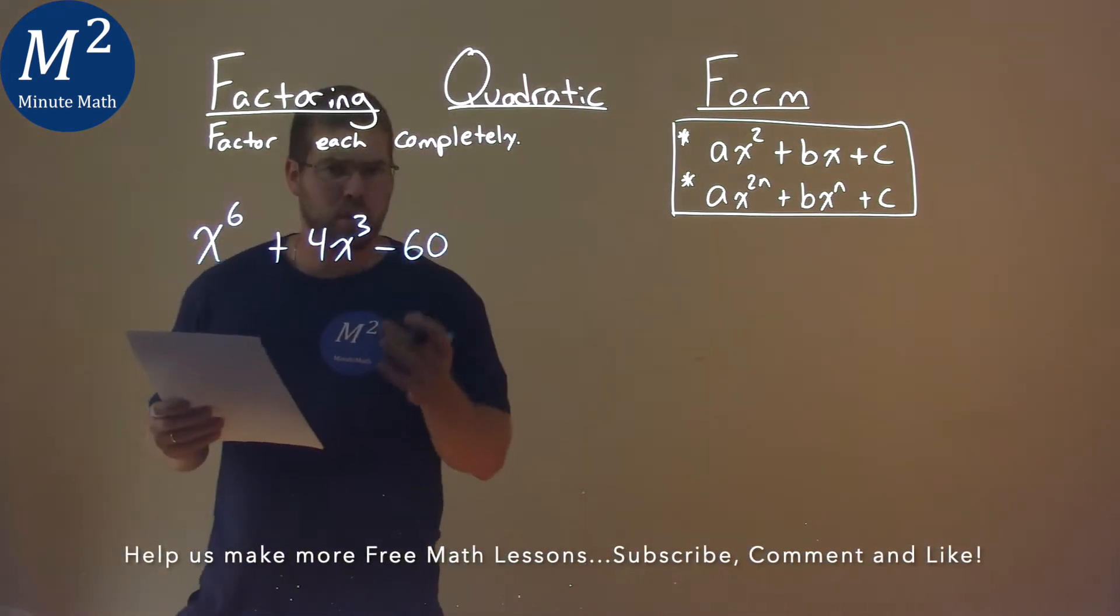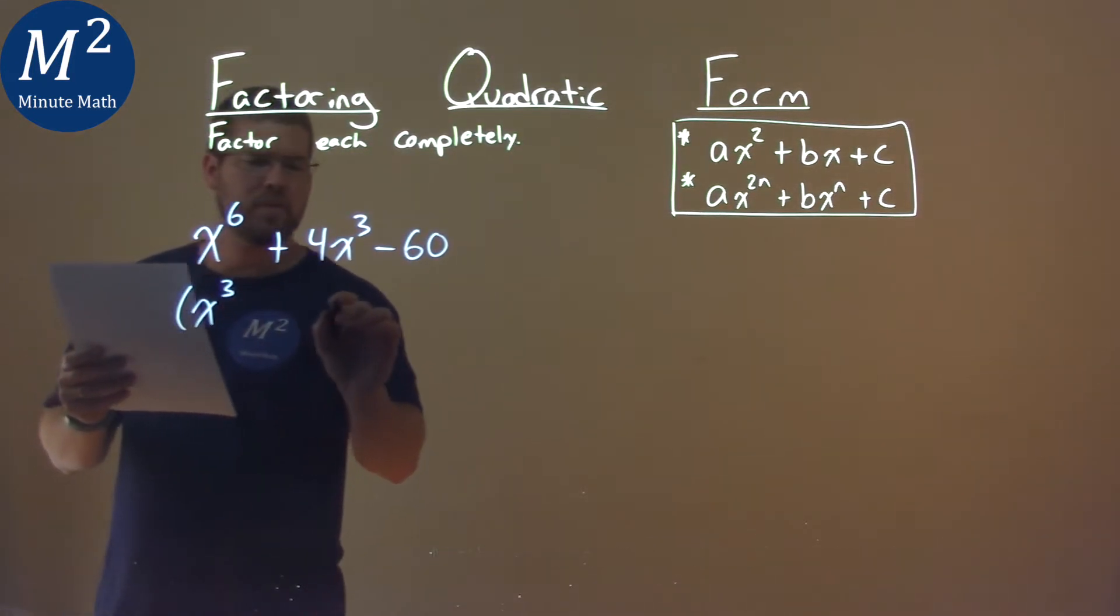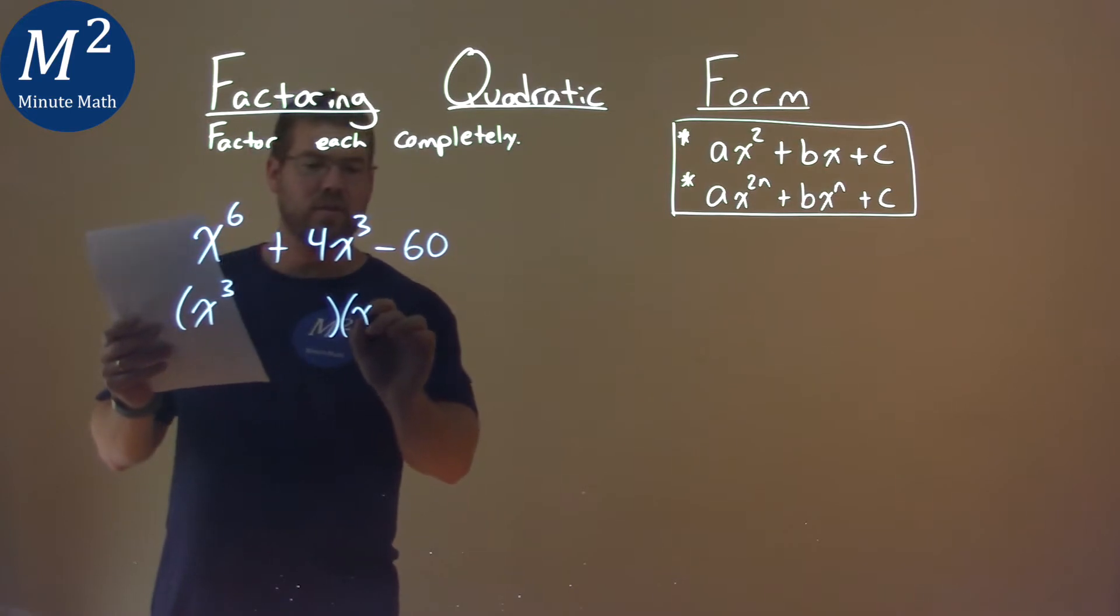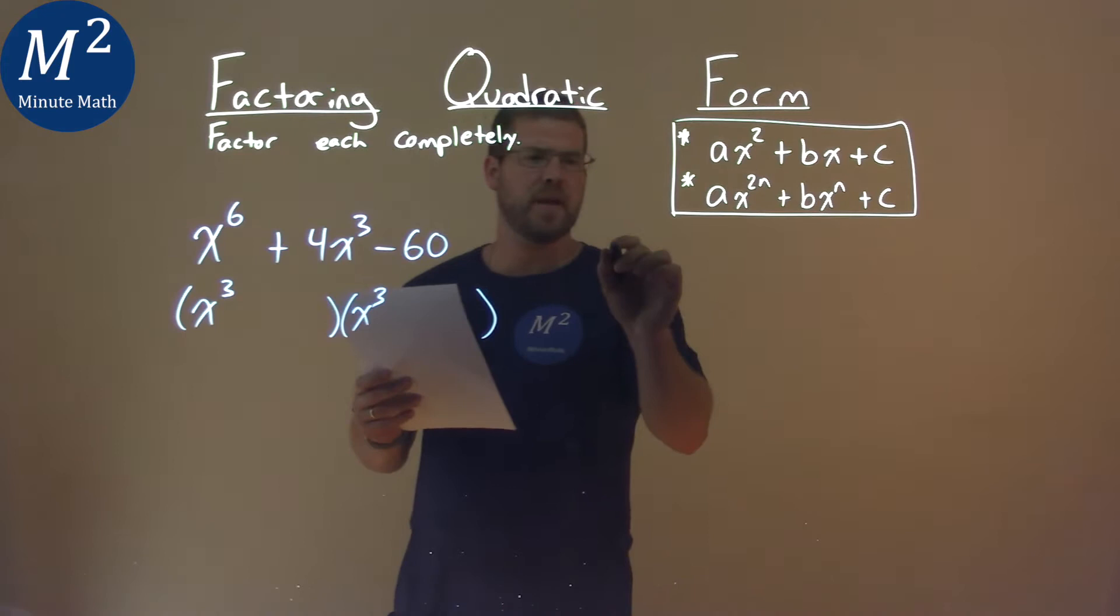Well, we can see this is in quadratic form, so we know it's going to have some form of x^3 times x^3, like this. But we have to look at our c value, negative 60.